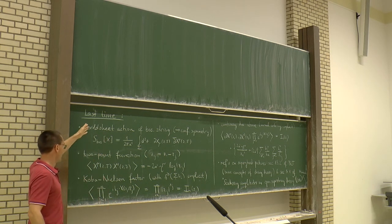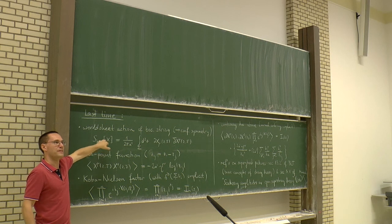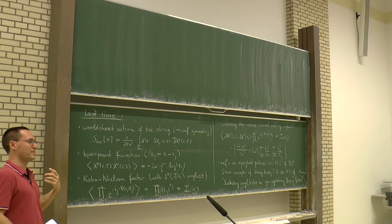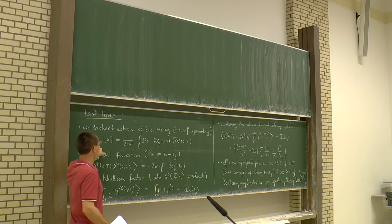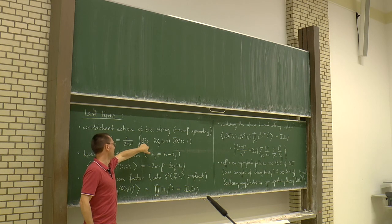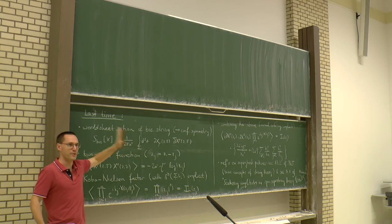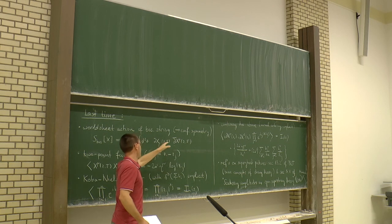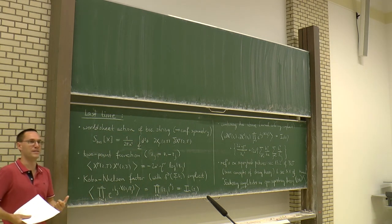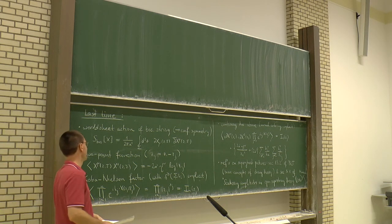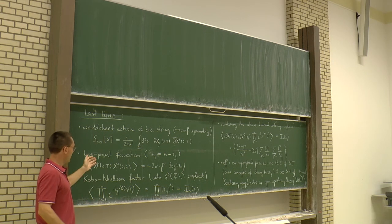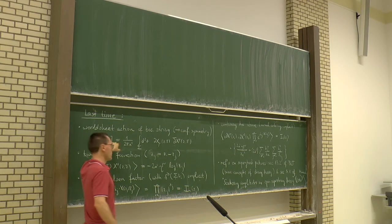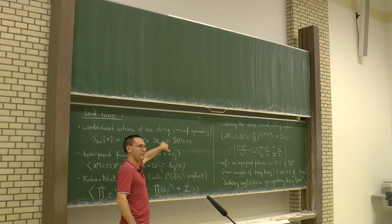I was giving you at the end of last lecture the world-sheet action of the bosonic string theory. This world-sheet action will be the engine to compute scattering amplitudes. In contrast to what you know from QFT Feynman rules, here we are doing some quantum field theory on the world-sheet. This is a two-dimensional action which you can view as a gauge fixed version of computing the world-sheet area. The first goal in the beginning of this lecture will be to compute correlation functions with this action. Correlation functions of what? We will look at the embedding coordinates of the string.